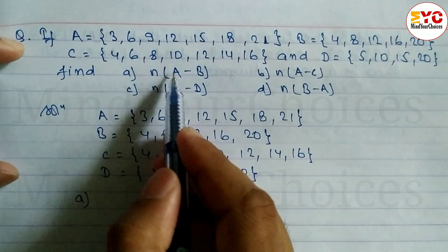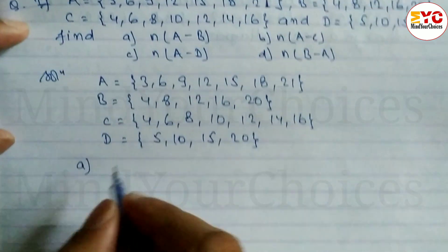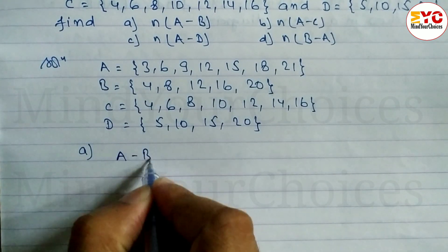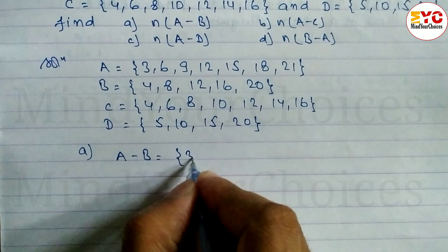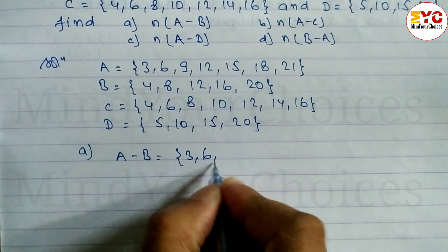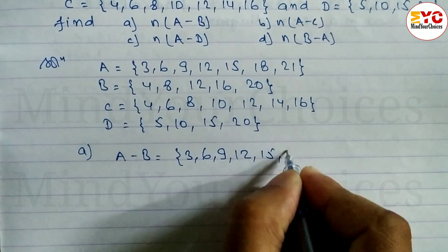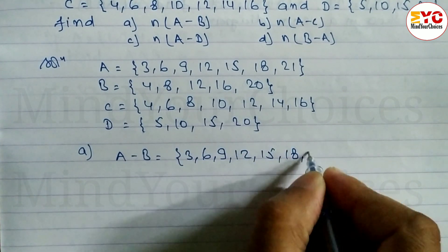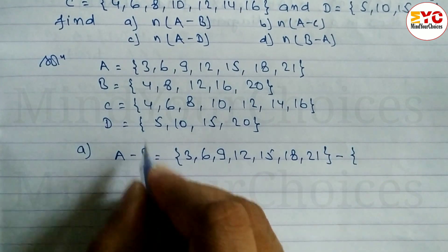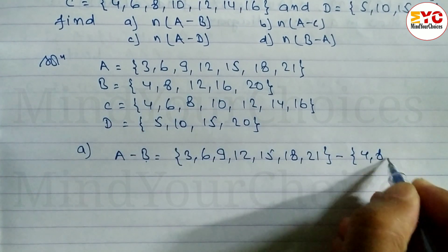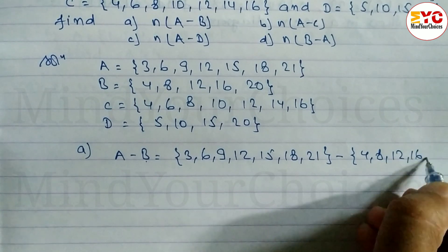First we have to find the difference of A and B, that is A minus B. Set A is equal to {3, 6, 9, 12, 15, 18, 21} minus set B which is equal to {4, 8, 12, 16, 20}.